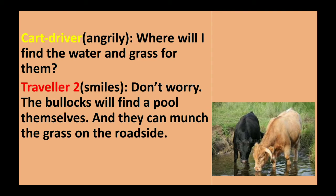The cart driver is very angry and he says angrily, 'Where will I find water and grass for them?' Traveller 2 smiles and says, 'Don't worry. The bullocks will find a pool themselves and they can munch the grass on the roadside.' Munch means eat. The cart driver becomes angry saying where he will find grass and water, but the traveller explains that they are animals and they will find their way and munch the grass on the roadside, and also find a pool nearby. You don't worry.